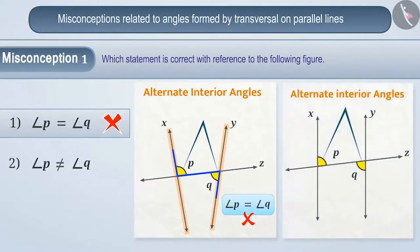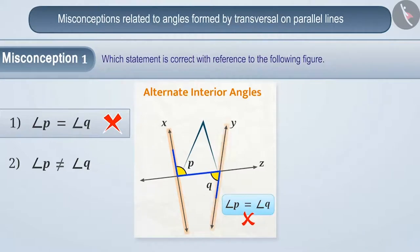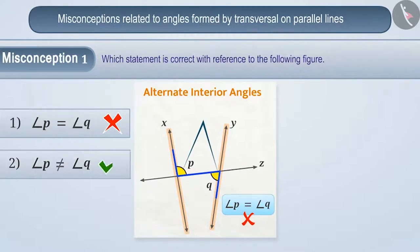The correct understanding is that alternate interior angles are equal only when they are made by the transversal of two parallel lines. Since line X and line Y are not parallel, angle P and angle Q cannot be equal. Hence, option 2 is the correct answer.